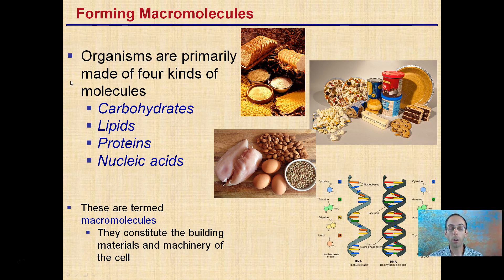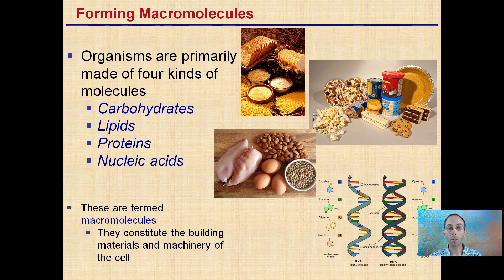Organisms are primarily made of four kinds of macromolecules: carbohydrates, lipids, proteins, and nucleic acids — which include both DNA and RNA. These are termed macromolecules and are the basic building materials and machinery for a cell. We're working our way up from small atoms to molecules to macromolecules — the primary molecules used for both the machinery and building blocks of the cell.